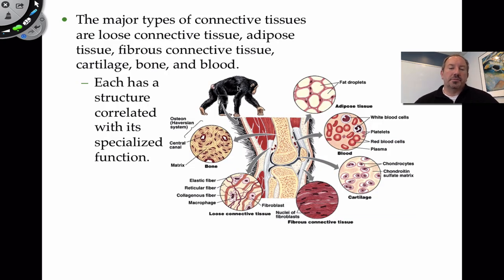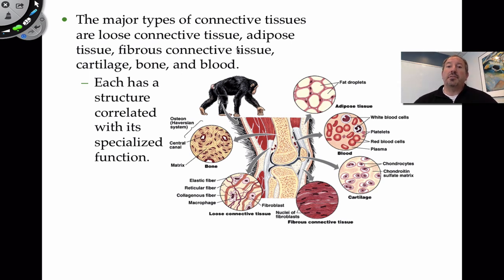There are many kinds of connective tissue: loose connective tissue, fibrous connective tissue, adipose tissue, cartilage, bone, and blood. The characteristic common to all is that the cells are scattered with a lot of extracellular matrix. The four tissue types of the body are epithelial tissue, connective tissue, muscle, and nerve. Each type of connective tissue has its own unique functions.